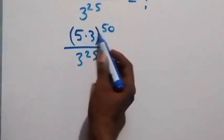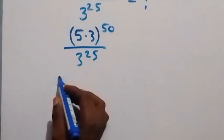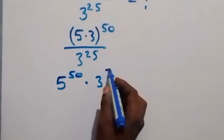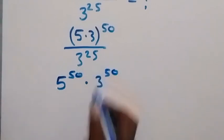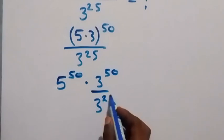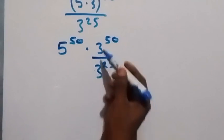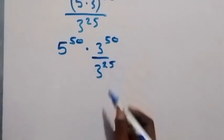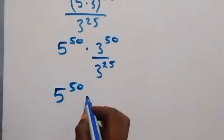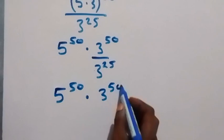The power 50 will affect each of these terms. We have 5 raised to power 50 times 3 raised to power 50, then divided by 3 raised to power 25. We bring it here as 3 raised to power 25. Since we have the same base, with division we can subtract the powers. Then we have 5 raised to power 50 multiplied by 3 raised to power 50 minus 25.